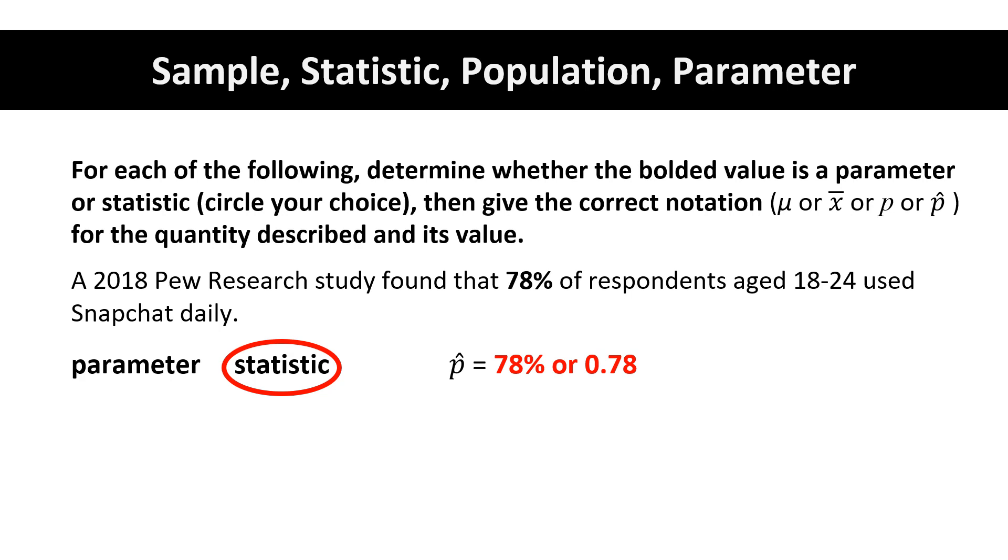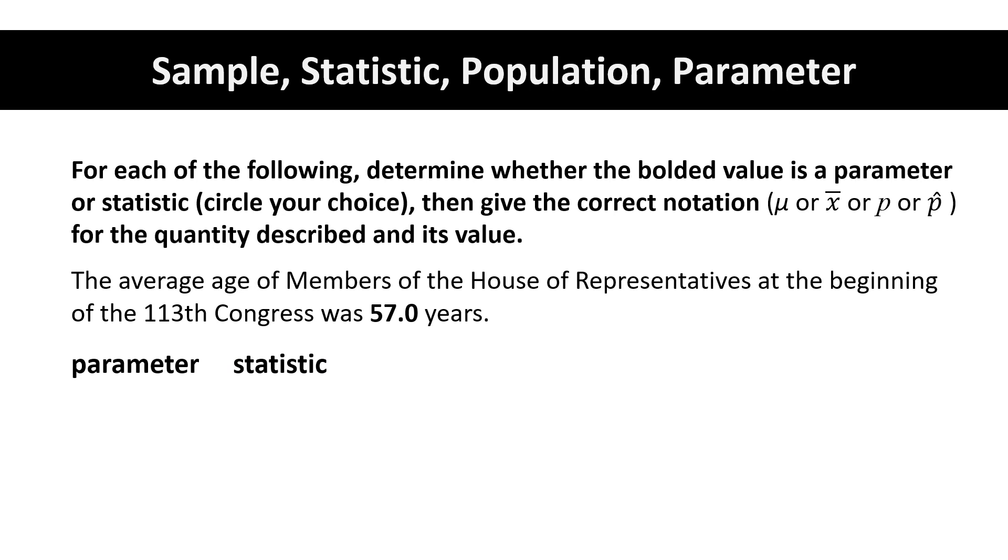Next, the average age of members of the House of Representatives at the 113th Congress was 57.0 years.